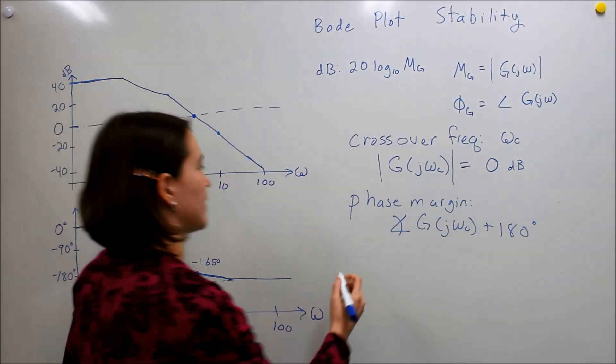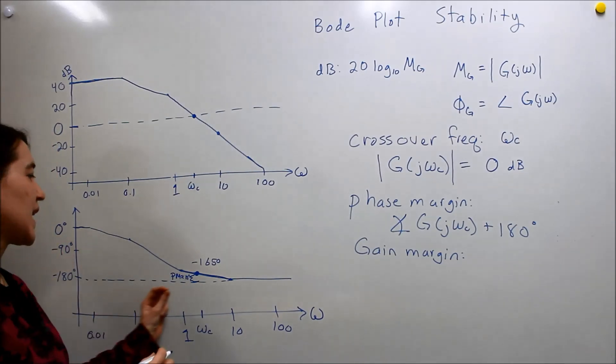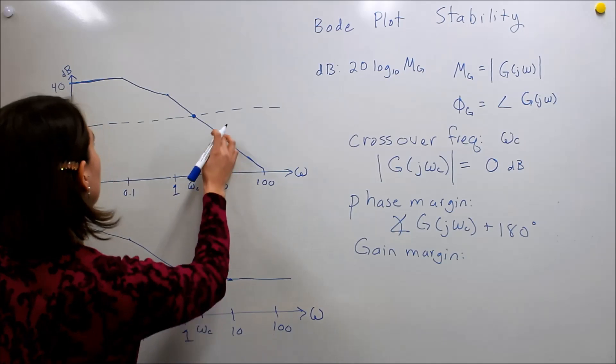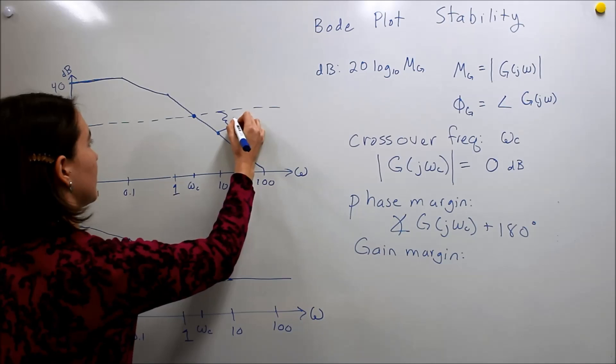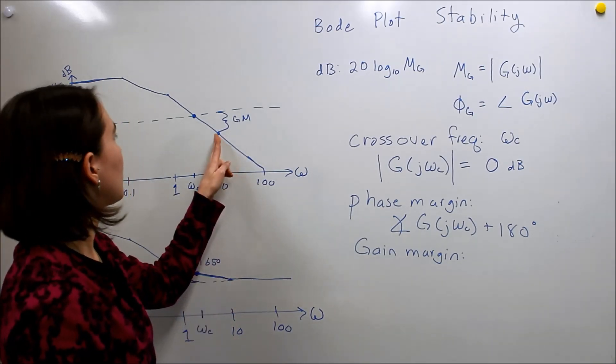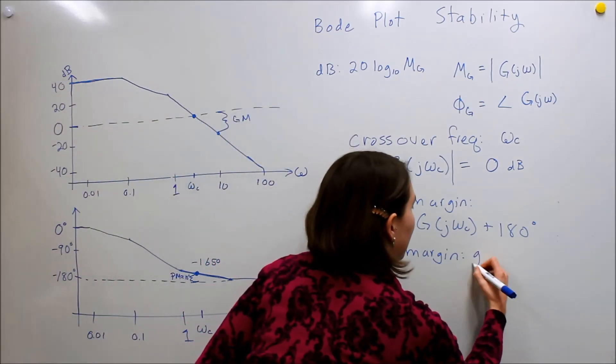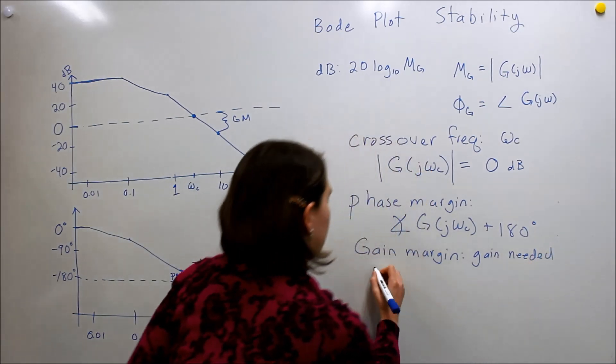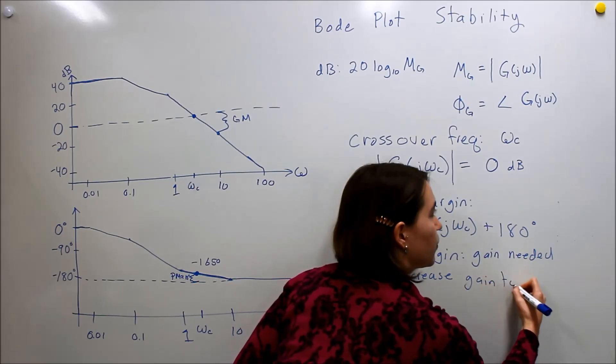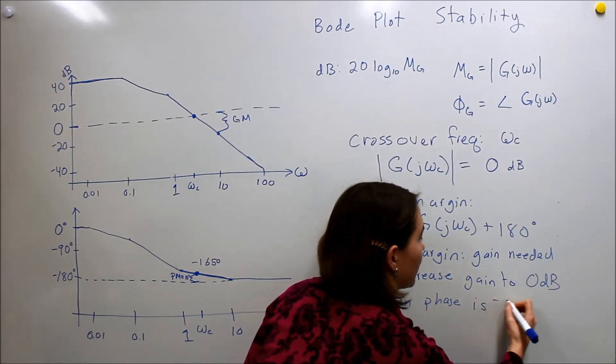Okay, and the last thing we're going to define is called gain margin. Okay, and this is, once we hit 180, so we have to find the 180 point, we look at the, so it's approximately here. We look at, it's the gain needed, this would be gain margin, needed at the point where you hit 180 in the phase. The gain that would make this point exactly equal to 0 dB, to unity. So, gain margin is the gain needed to increase gain to 0 dB when phase is negative 180 degrees.